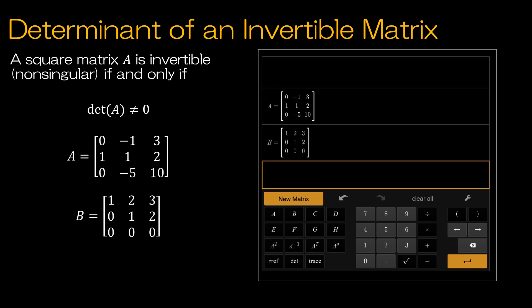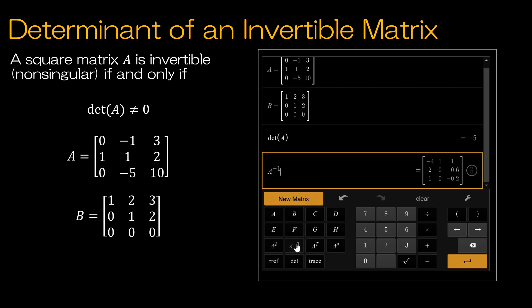Our next property tells us that if a square matrix is invertible, its determinant does not equal 0, and vice versa. So if the determinant does not equal 0, then the matrix is invertible. So let's take a look at the determinant of A, and notice that it's negative 5. And then if I find A inverse, I get a solution.